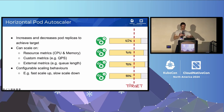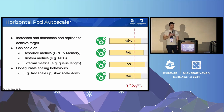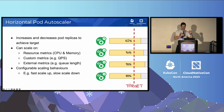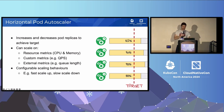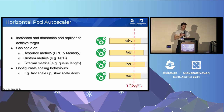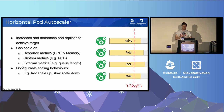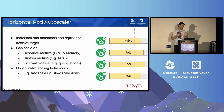Moving on to Horizontal Pod Autoscaler — HPA. HPA increases and decreases pod replicas to achieve a particular target. It can scale on standard resource metrics like CPU and memory, on custom metrics such as QPS, or external metrics such as queue length. It also supports configurable scaling behaviors, so you can tune scale-out and scale-in discretely — for example, scaling out more aggressively but scaling down less aggressively, which is a common pattern.